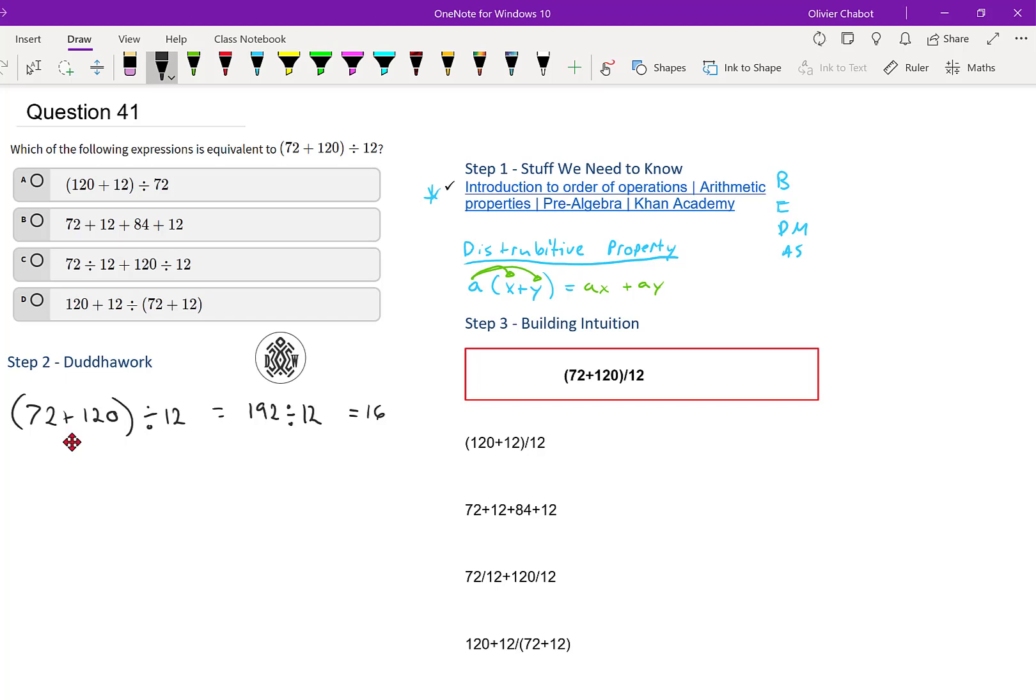So what we can do is here just look at the distributive property of division. If we distribute the division by 12, we get the following. So we get 72 over 12, plus 120 over 12. And if you do the math here, you get that it's 6 plus 10, which is our 16. So that makes sense.